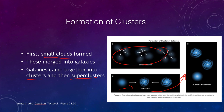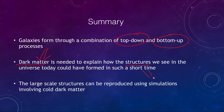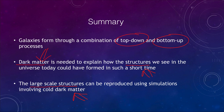To summarize: galaxies form through a combination of top-down and bottom-up processes, and dark matter is required. We have to have dark matter to explain the structures of the universe we see today - there is no other way they could have formed in just 14 billion years. We can also reproduce the general features we see using cold dark matter in simulations, producing in the proper amount of time the structures we actually observe. That concludes this lecture on the formation of the large-scale structure of the universe.